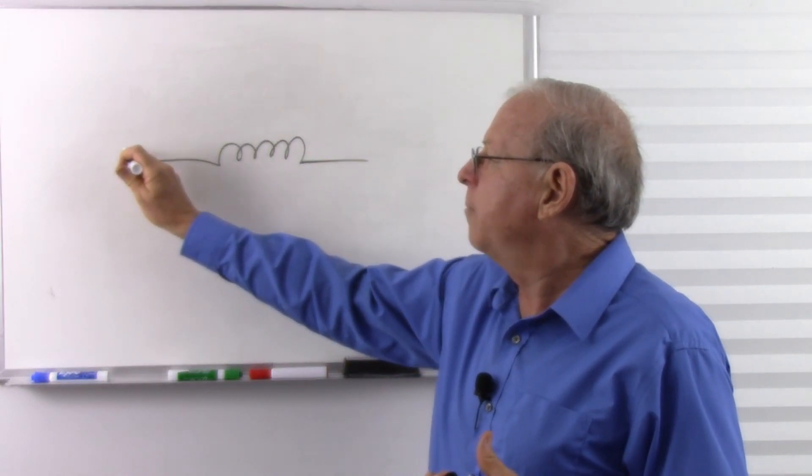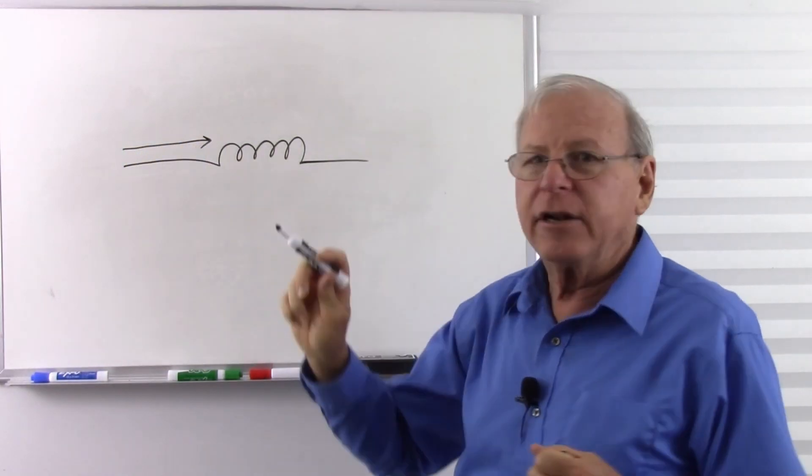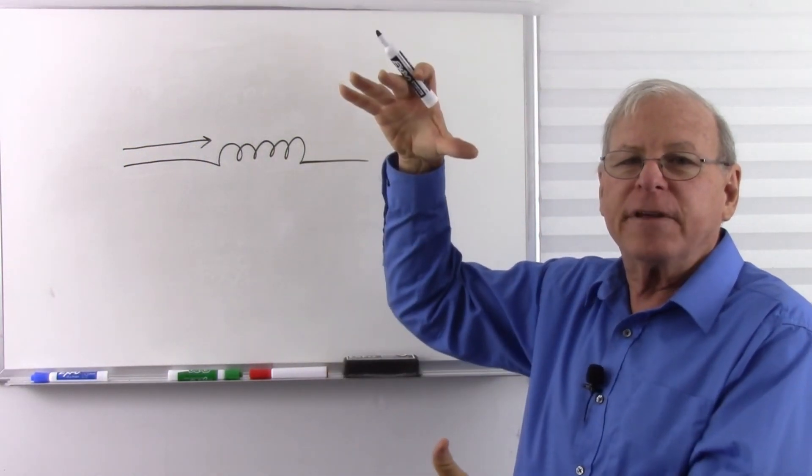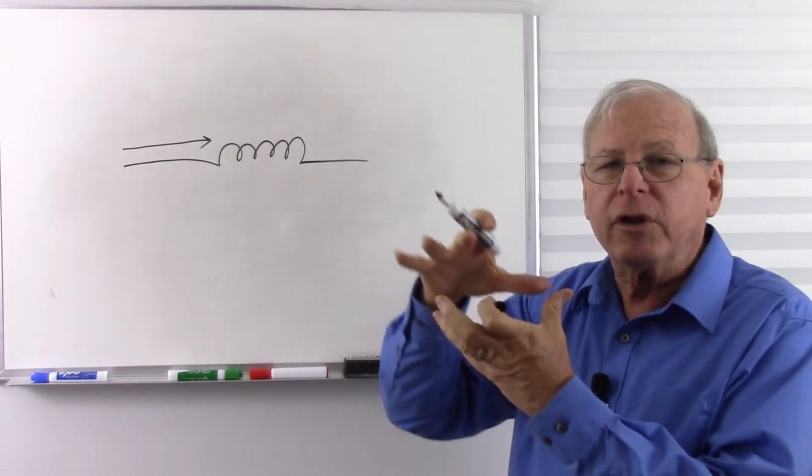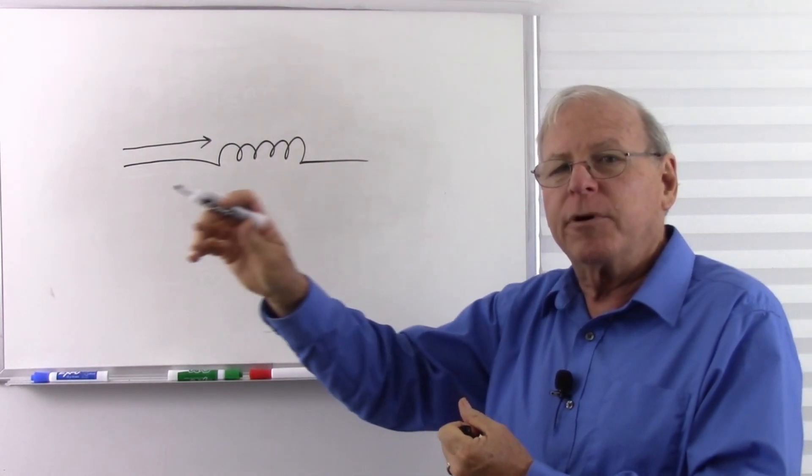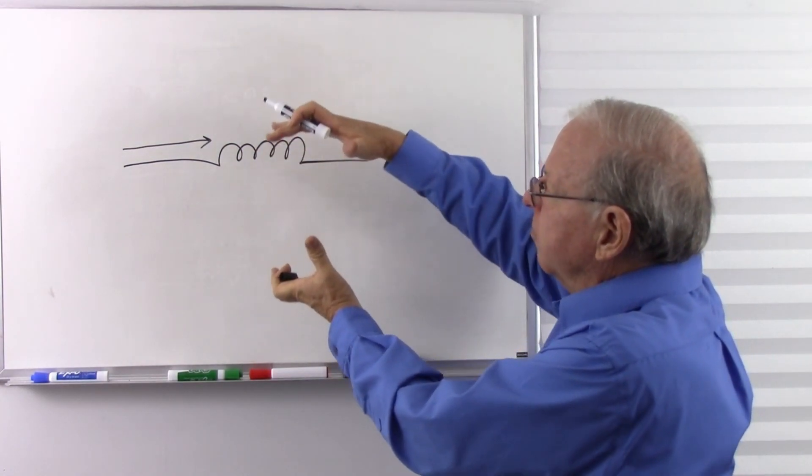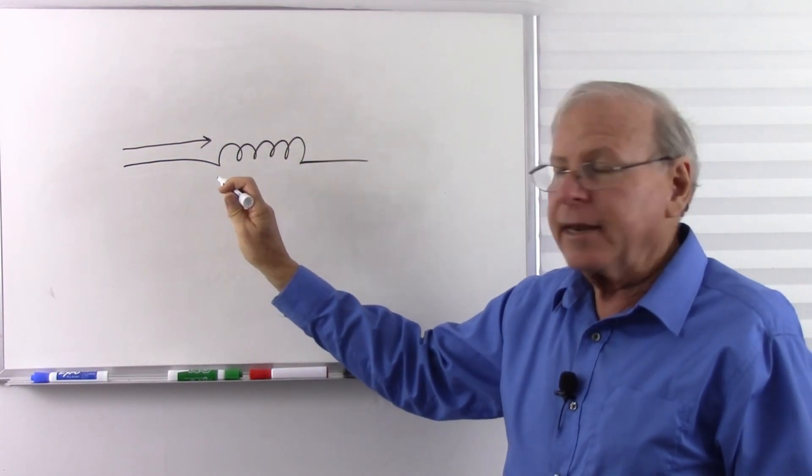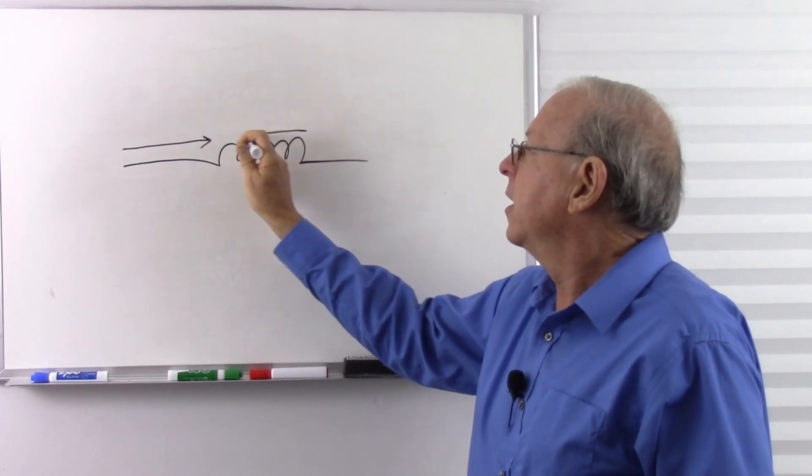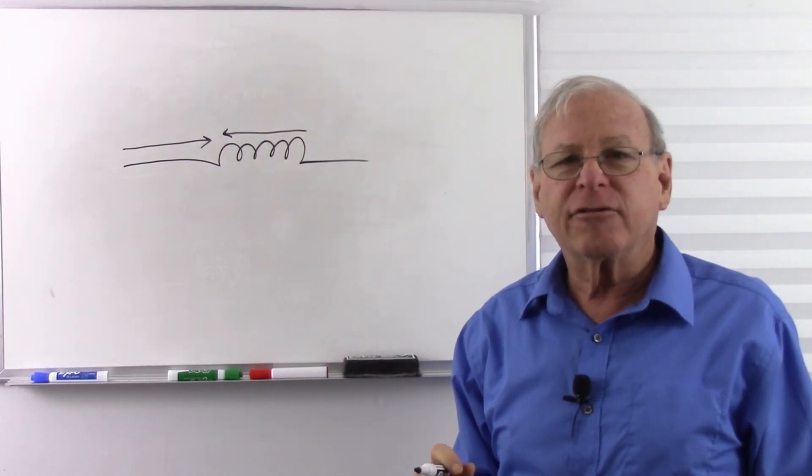Basically what happens is if I push an electric current into the inductor, that causes a magnetic field to build. Only when the current is flowing do I have a magnetic field. And when I push a current in, I get a building magnetic field, so the magnetic field is moving. And that moving magnetic field induces a current that pushes the opposite direction.